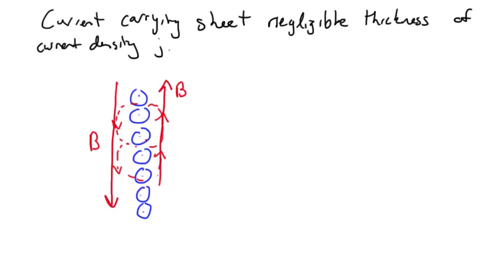Now we take an Amperian loop that is of length L and width W. We'll do our integral of B dot dS equals mu naught I enclosed.